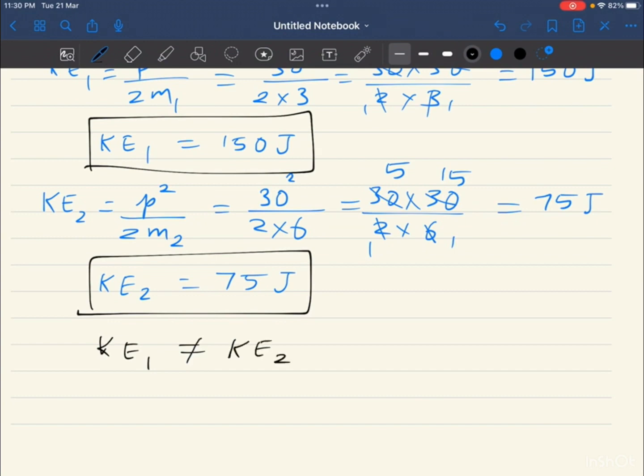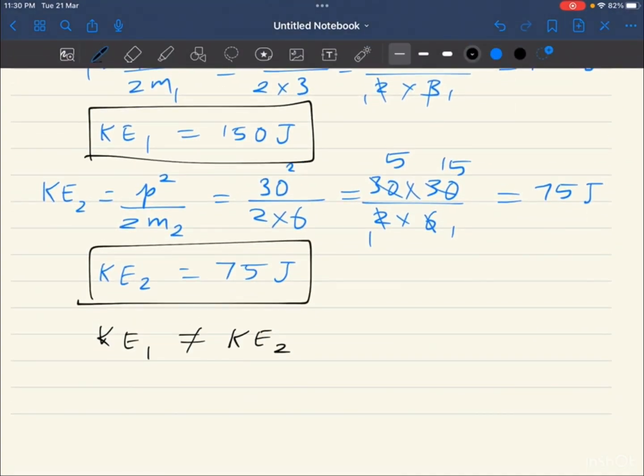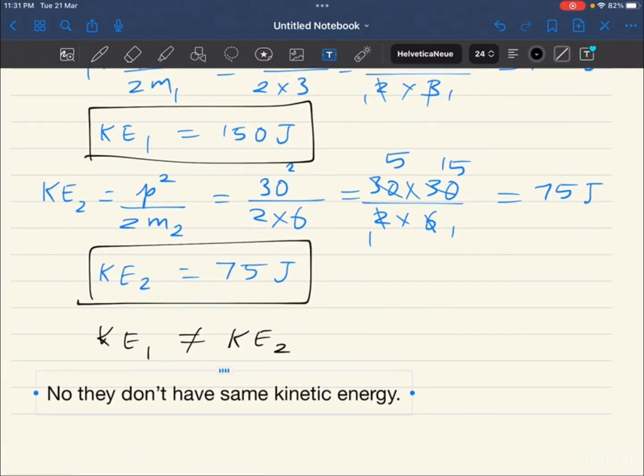So kinetic energy 1 is not equal to kinetic energy 2. Both are different. Question: Will they have same kinetic energy? No, they do not have same kinetic energy. Also, the kinetic energy depends on the mass. This is inversely proportional to the mass. So mass is equal to kinetic energy.